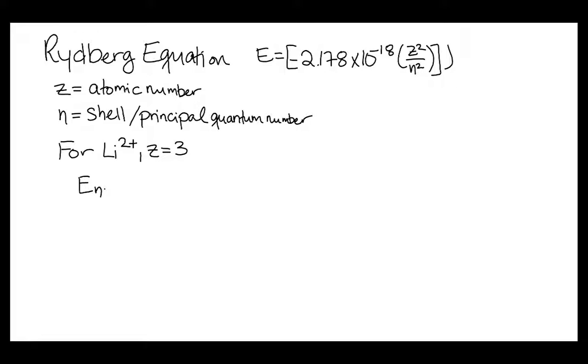So for the first energy level, where n equals 1, if we plug in our values, what we get is that the energy of that shell is equal to minus 2.178 times 10 to the negative 18 times 3 squared over 1 squared joules, which, after calculation, is equal to negative 1.960 times 10 to the negative 17 joules.